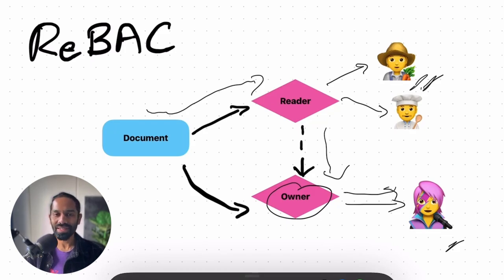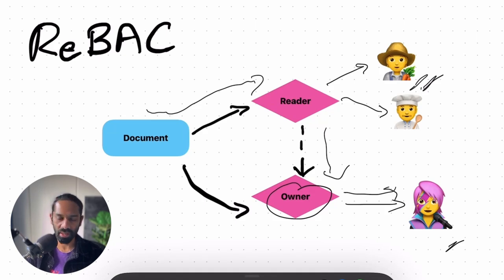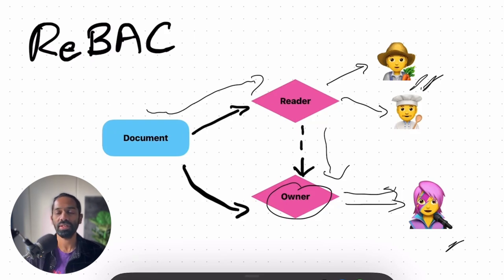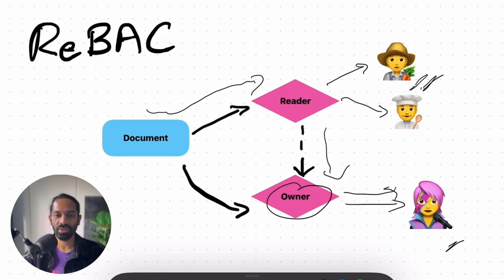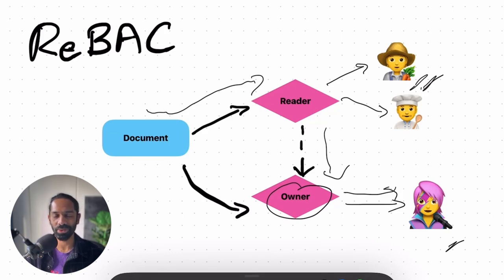Now, with traditional REBAC, it's hard to work with data that's only available at request time because you need to have the relationships beforehand. For example, if your permission decision needs to take into account the IP address of the calling user, you don't have the IP address beforehand to store as a relationship ahead of time. So you can't easily use that in a graph walk or graph traversal.